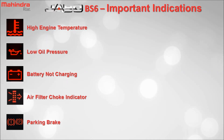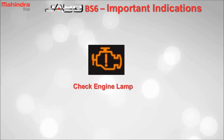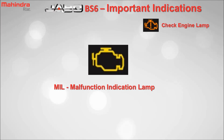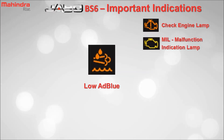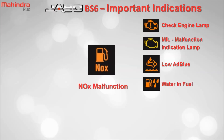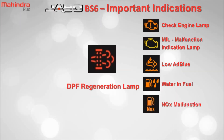In addition to these indicators, the following are also of prime importance. Check engine lamp — there is a fault related to engine or its supporting system. Malfunction indication lamp — there is an emission or pollution related fault in the engine or exhaust system. Low AdBlue — level of AdBlue is low in the AdBlue tank. Water in fuel — amount of water in diesel is more than the limit, which is harmful for the fuel system. NOx malfunction — there is a NOx related problem in the engine or exhaust system. DPF regeneration lamp — DPF needs regeneration.